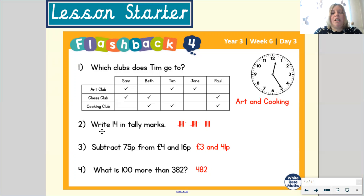Let's look at number 2: write 14 in tally marks. Check your work — did you draw this? This represents 5. Then counting on: 5, 10, 11, 12, 13, 14.